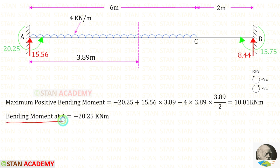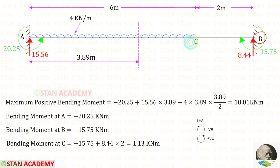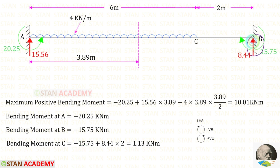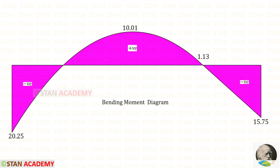Let us find the bending moment at point A — the moment MA is acting anticlockwise so it will be negative. To find the bending moment at points B and C we use the left-hand side rule for convenience. At point B, moment MB is acting clockwise so it is negative. At point C, MB is clockwise (negative), the reaction is anticlockwise (positive) with distance 2, giving the bending moment at C as 1.13 kilo newton meter. You can see the bending moment diagram. At two points the bending moment becomes 0 — these are called points of contraflexure.